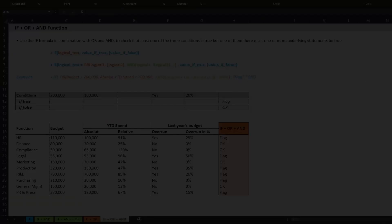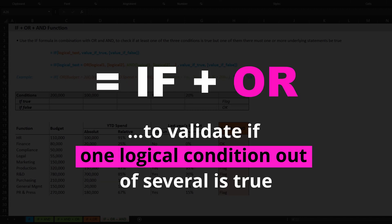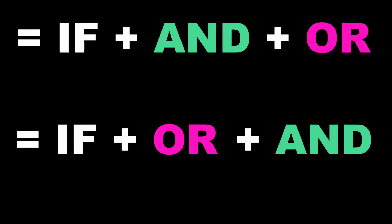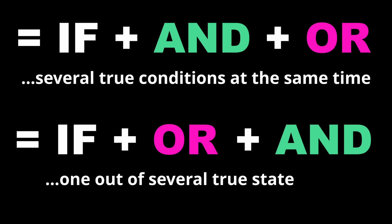Now that we've gone through all of the formulas let's briefly recap. Use IF in combination with AND to check if several conditions are all true. Use IF in combination with OR to check if at least one of several conditions is true. Both combinations can be complemented by AND or OR, but the primary direction based on the first two conditions does not change. When creating your formula, think about what you really want to test: is it several valid statements at the same time, or only one out of a selection? Give the video a thumbs up if it was helpful, let me know which other Excel formulas you'd like me to explain, and subscribe so you don't miss them.